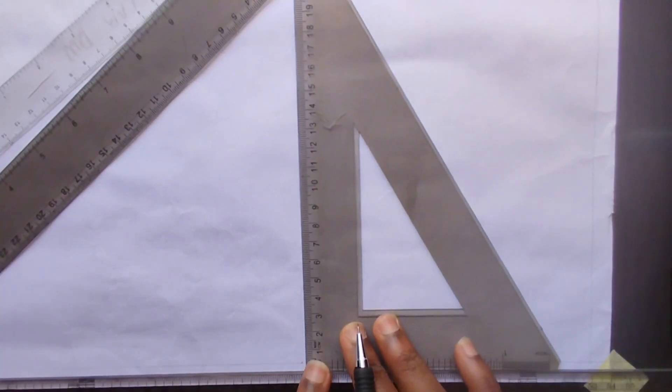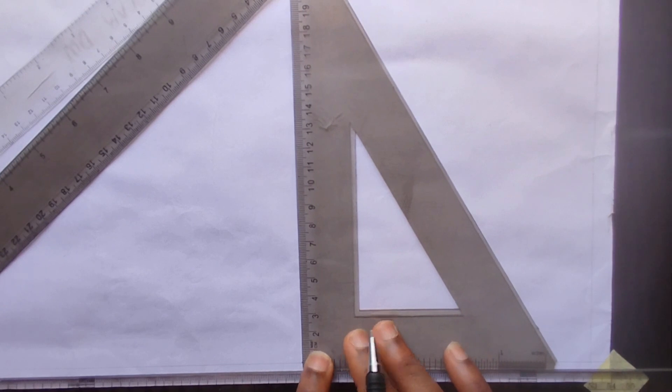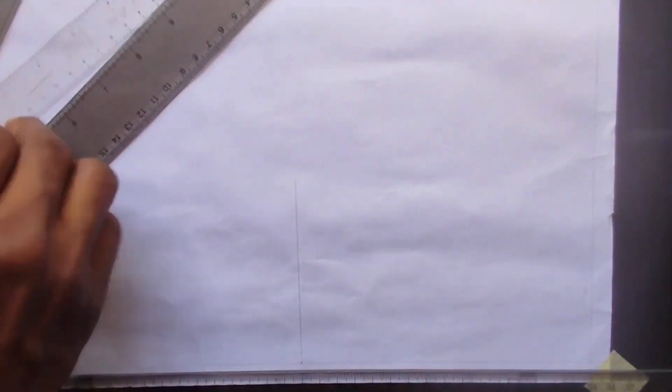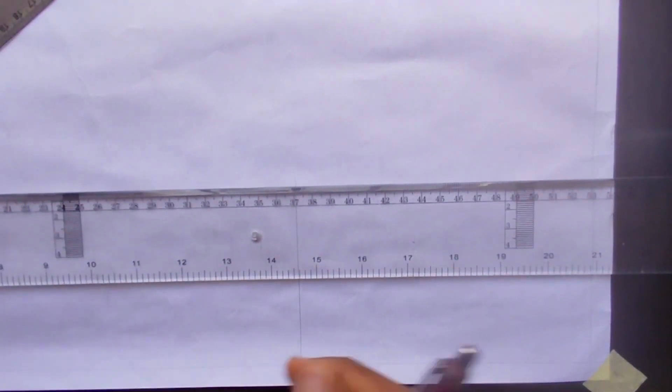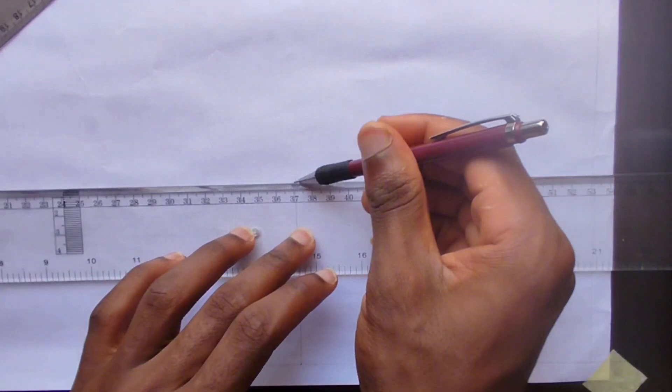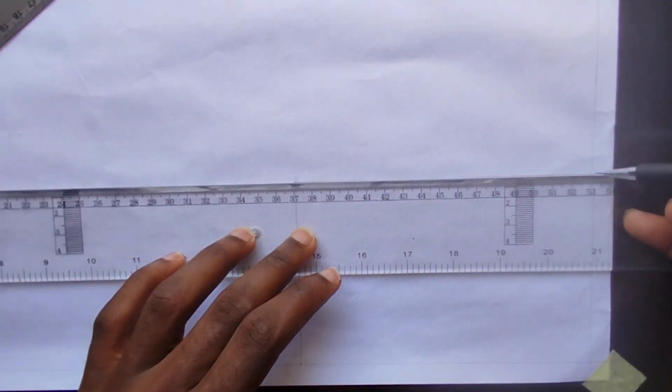So now we are going to be doing this, we pick our set square from this point, draw upward. And from here, join it with this line that we have drawn here.